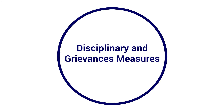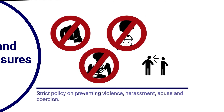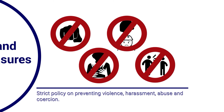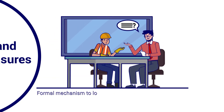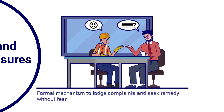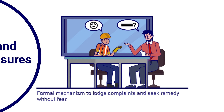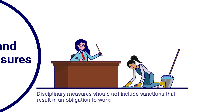Disciplinary and grievance measures. Establish a strict policy on preventing violence, harassment, abuse, and coercion, and train all relevant personnel on their roles and responsibilities under the policy. Establish a formal mechanism for migrant workers to lodge complaints and seek remedy without fear, including mechanisms to report violations anonymously, taking into consideration language and cultural barriers. Disciplinary measures should not include sanctions that result in an obligation to work.